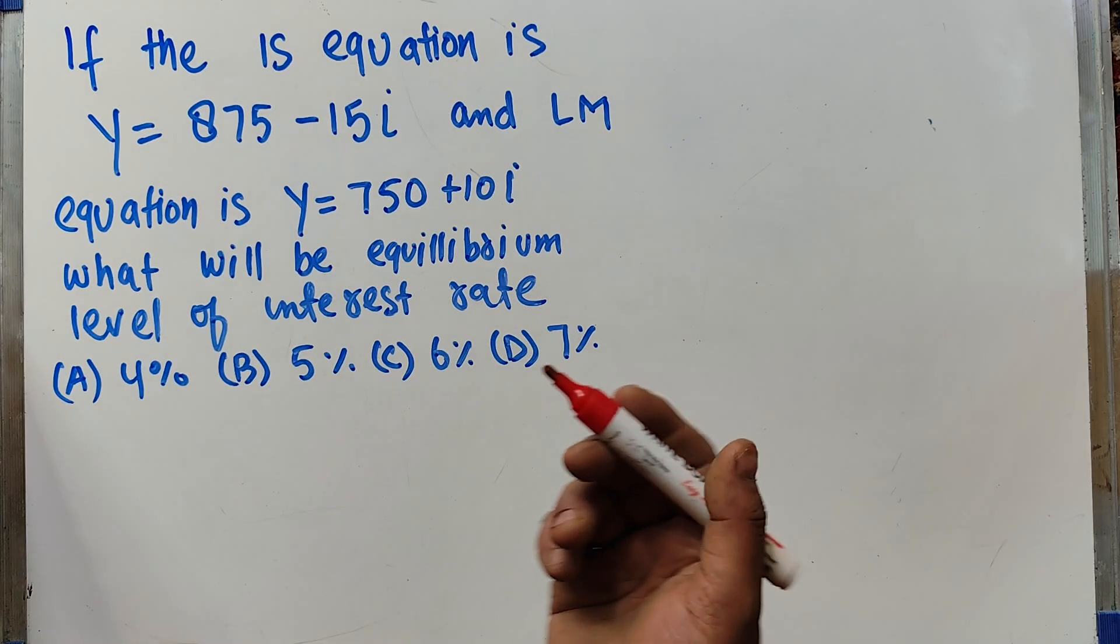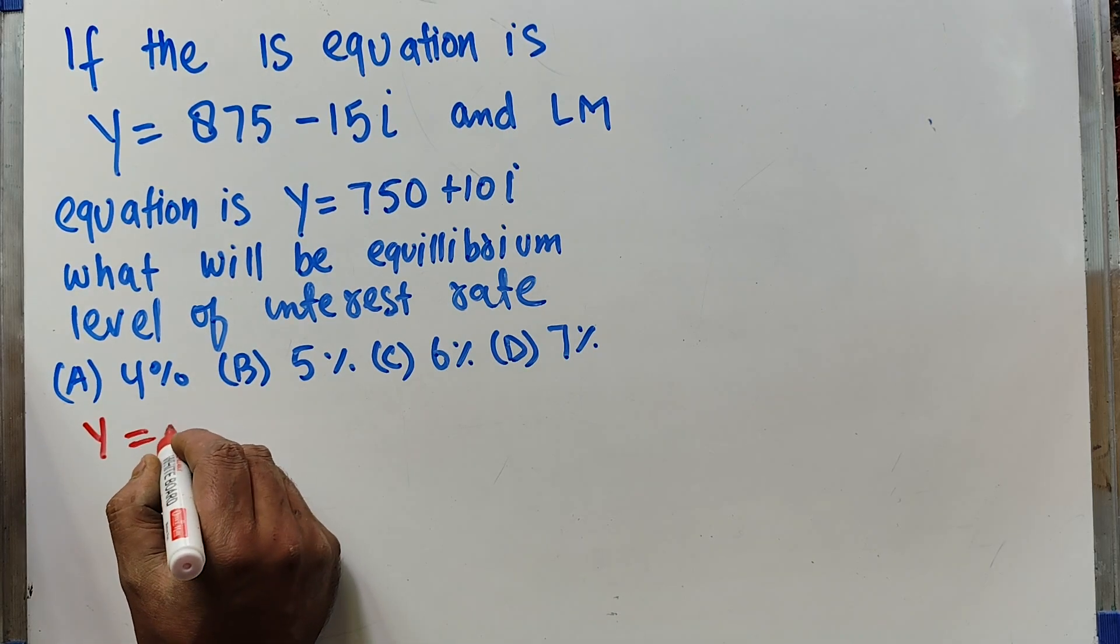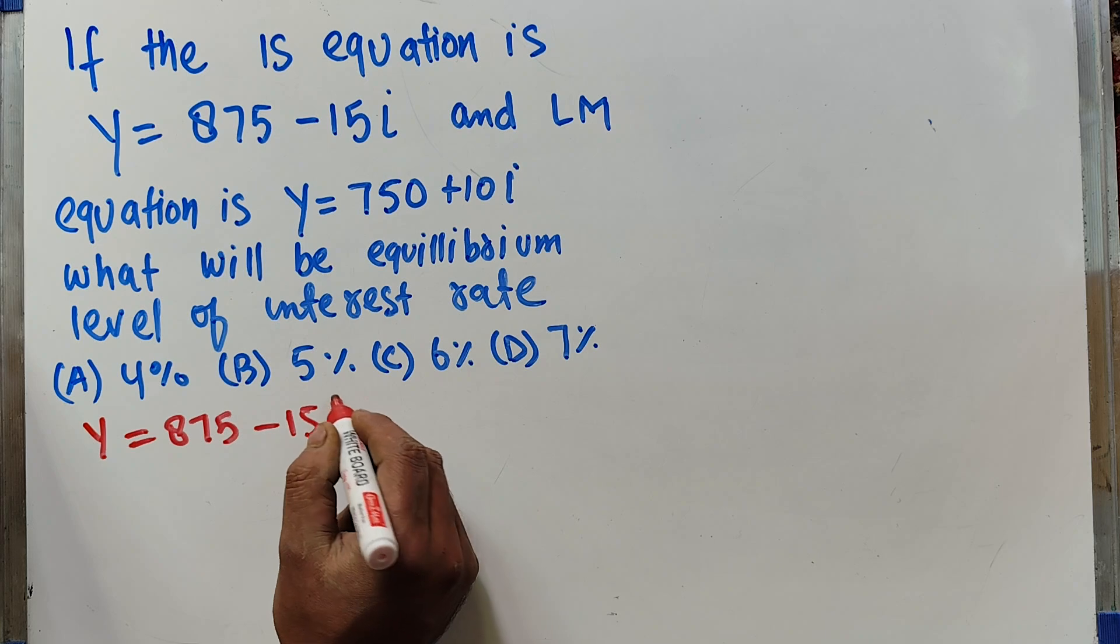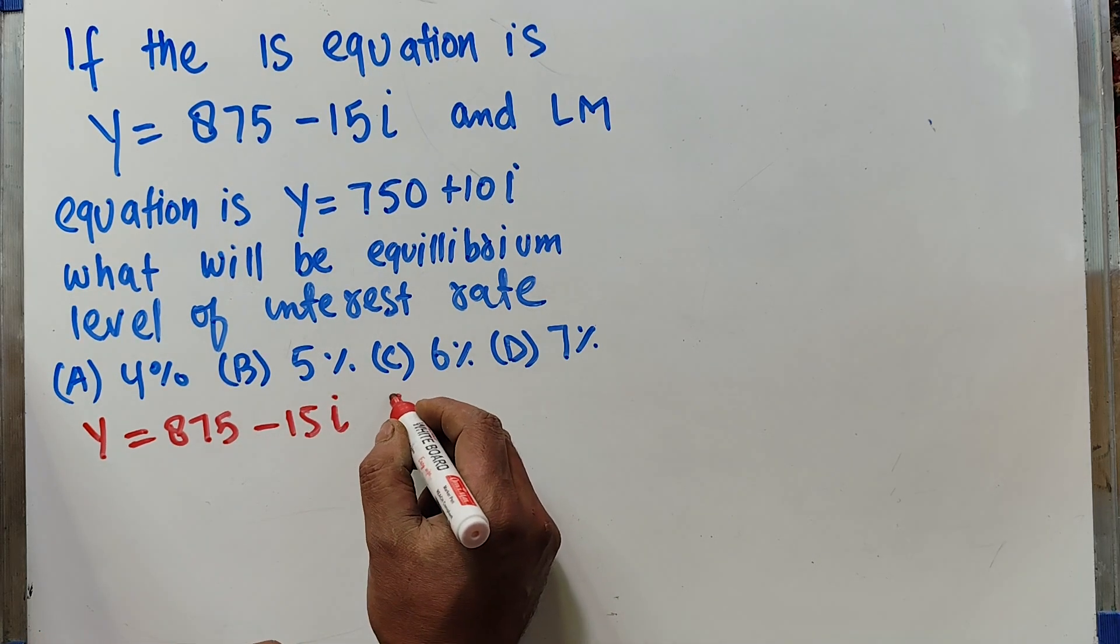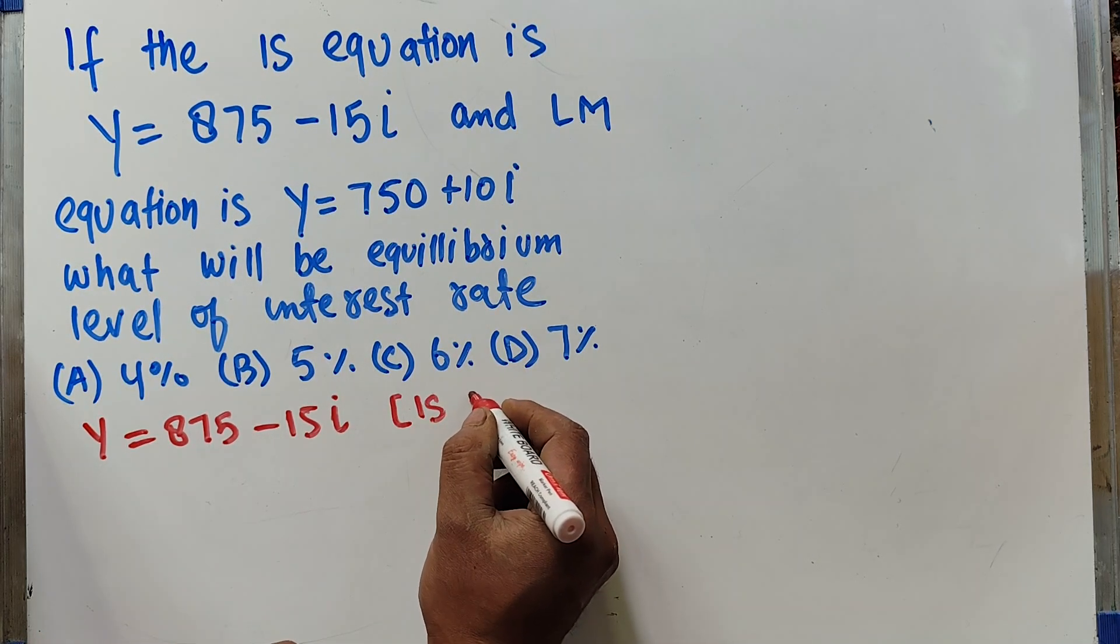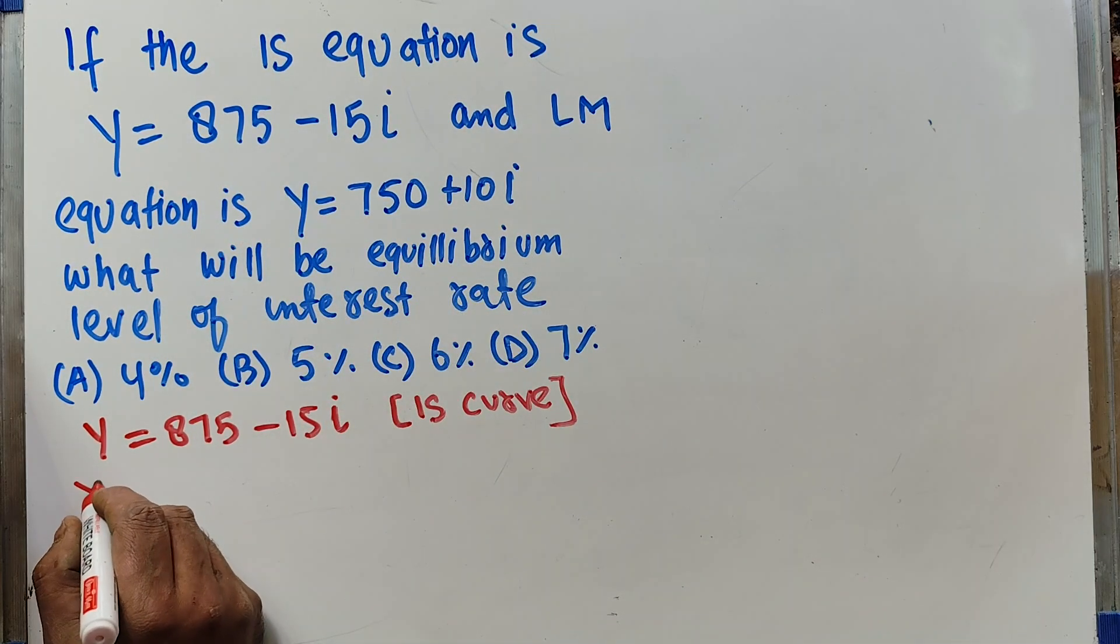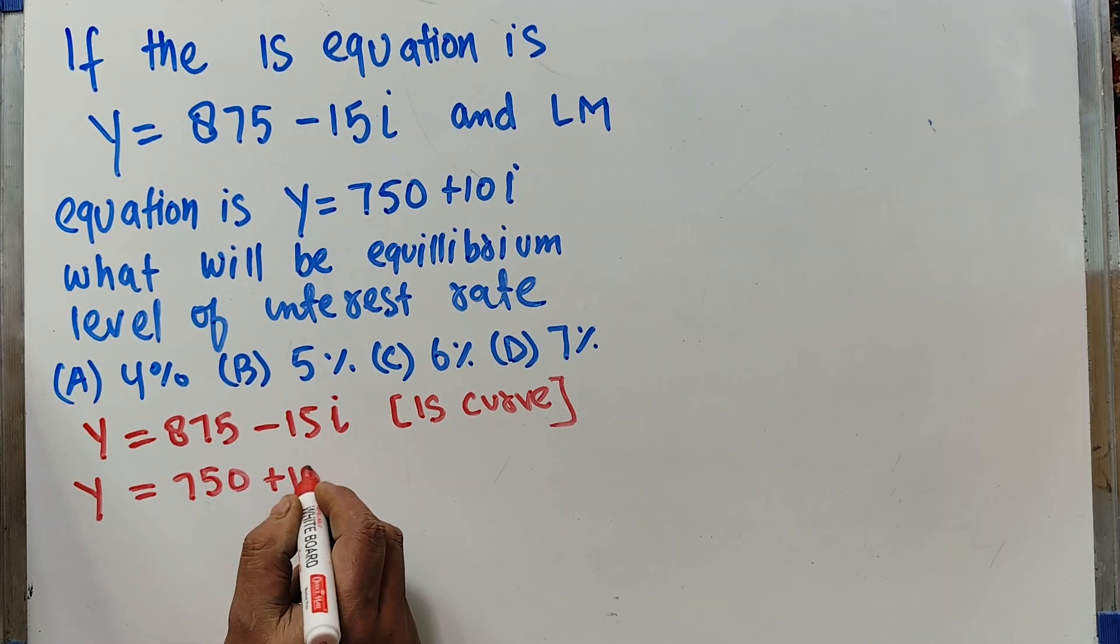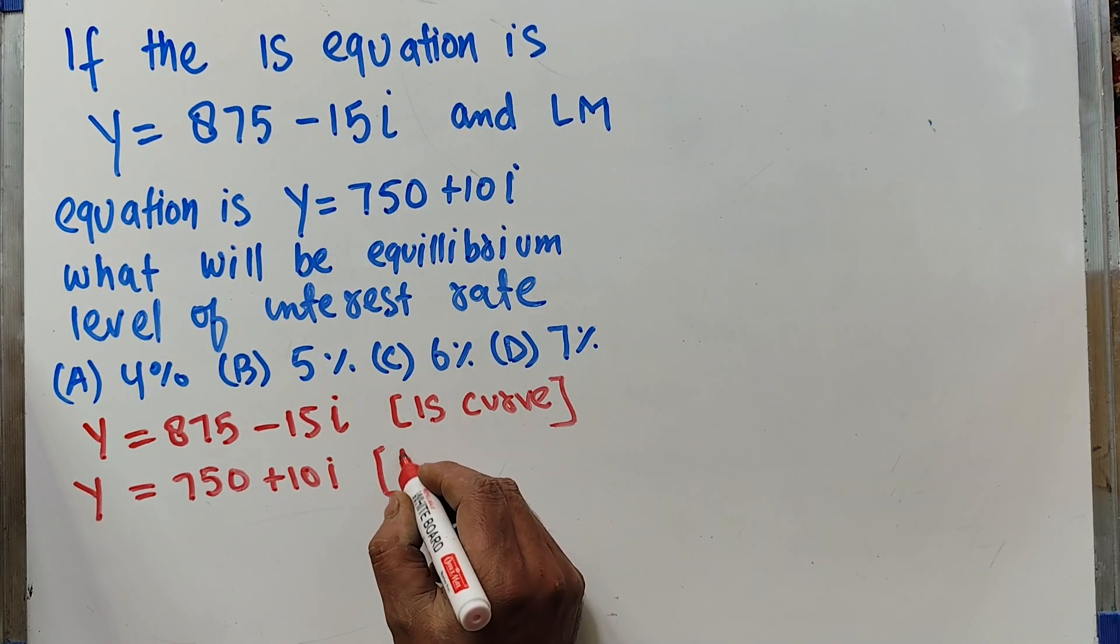The IS equation, Y = 875 - 15I, shows us the goods market equilibrium. This is our IS curve. The LM curve, Y = 750 + 10I, shows us the money market equilibrium.